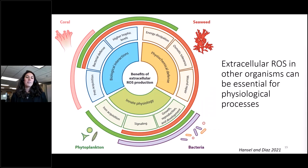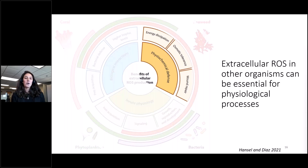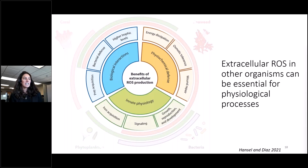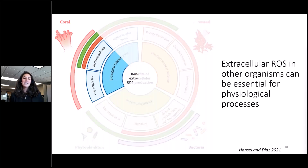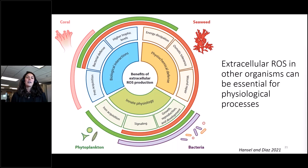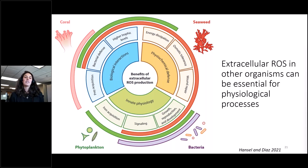Although not extensively studied in marine environments, research has looked at the role of extracellular ROS production in organisms, finding roles in physiochemical defenses, biological interactions, and innate physiology — across organisms such as seaweed, bacteria, phytoplankton, and coral. Previously, ROS produced by coral have been noted to play a role in prey acquisition or bacterial defense. However, coral have only been identified with a few ROS associations, largely due to a lack of research rather than a belief that ROS plays no further role. This leads us to speculate that there are other roles ROS can play in coral health.